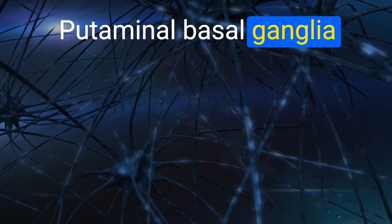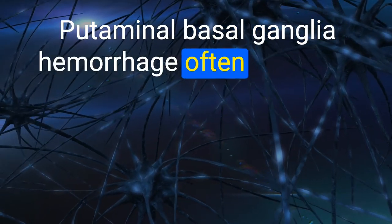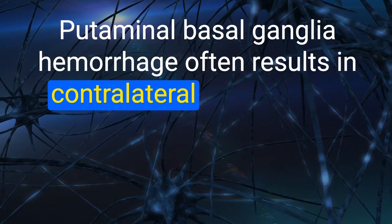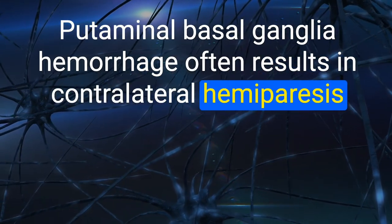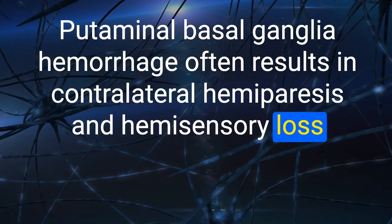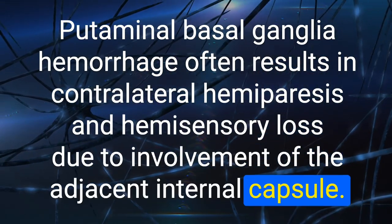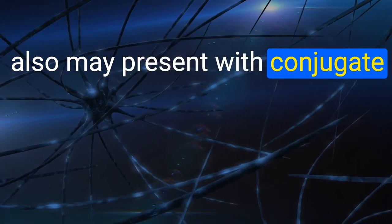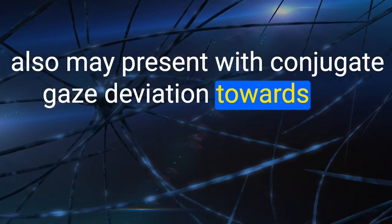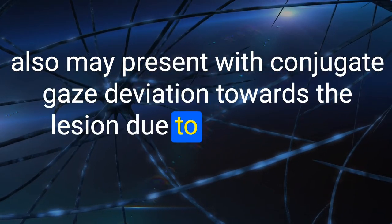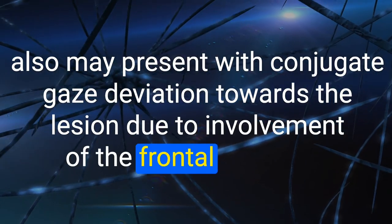98. Putaminal/basal ganglia hemorrhage often results in contralateral hemiparesis and hemisensory loss due to involvement of the adjacent internal capsule. It may also present with conjugate gaze deviation toward the lesion due to involvement of the frontal eye fields.